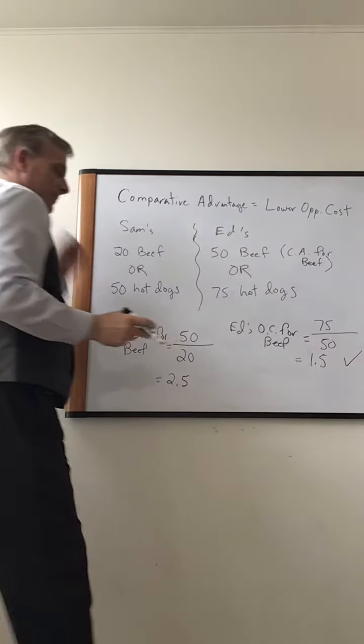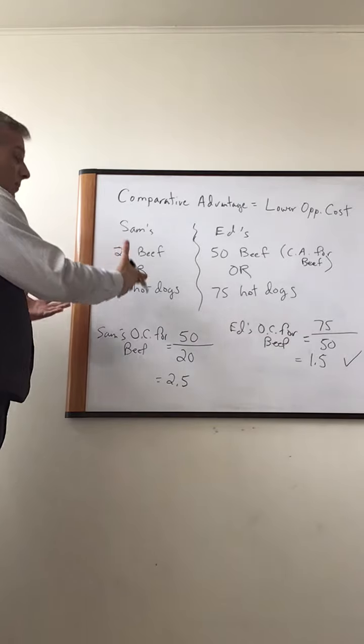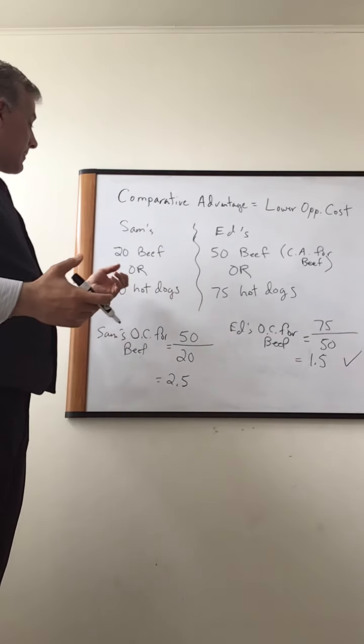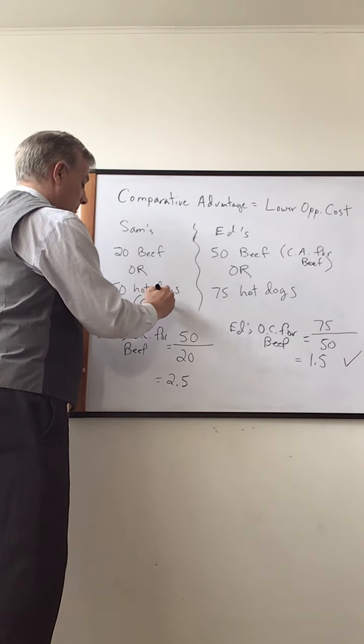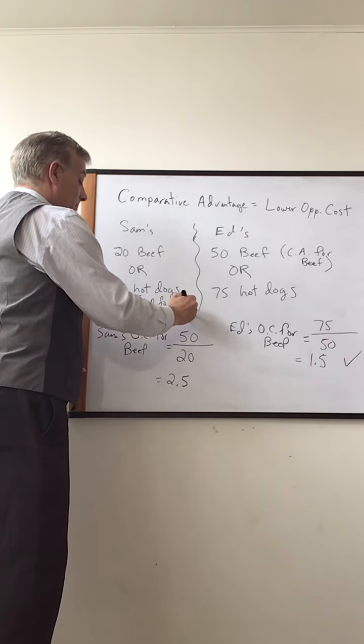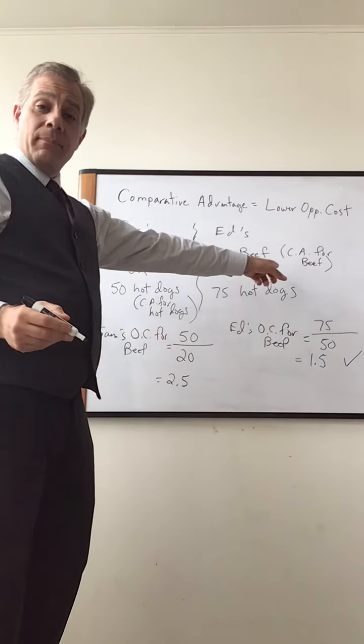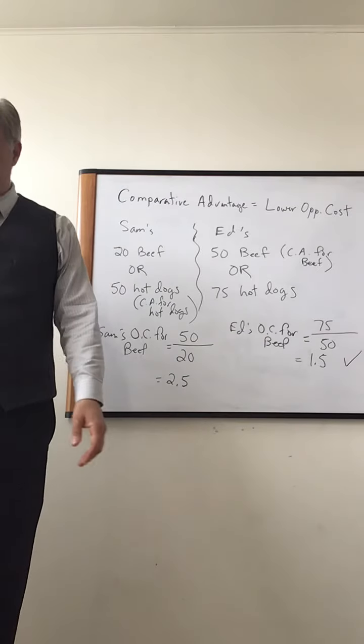Well, what does this mean? We went through that calculation. We get a lot of benefits from it. We know that Sam has comparative advantage for hot dogs. Why? Well, because Ed cannot have comparative advantage for both. Cannot do it. But we could also do the calculation.